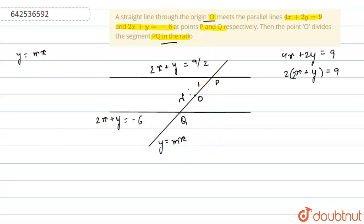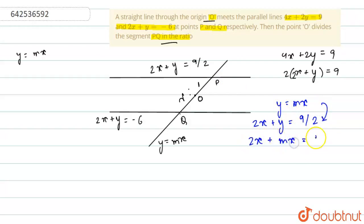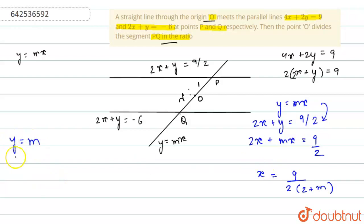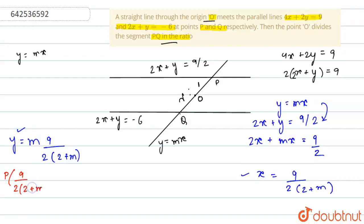First, we will find P. The first line is y equals to mx and the second is 2x plus y equals to 9 by 2. For point P, we put y equals to mx in this line. So this will be 2x plus mx equals to 9 by 2, and x is taken common, so x equals to 9 upon 2(2 plus m). This is the x-coordinate. For the y-coordinate, we put y equals to m into x, so y equals to 9m upon 2(2 plus m). Therefore, point P is (9 upon 2(2 plus m), 9m upon 2(2 plus m)).